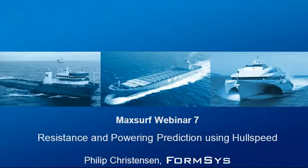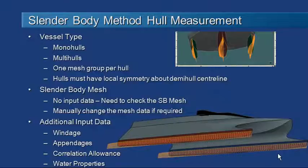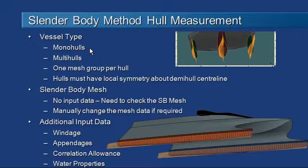Hello and welcome to MaxSurf webinar 7, video 4 on resistance and powering using Hull Speed. We've seen how we can use the regression methods for resistance prediction. Now let's take a look at the slender body method. This is a first principles method using potential flow calculations and it's very suitable for application to slender vessels — a length-to-beam greater than about 5 — and it can be applied to monohulls or multi-hulls.